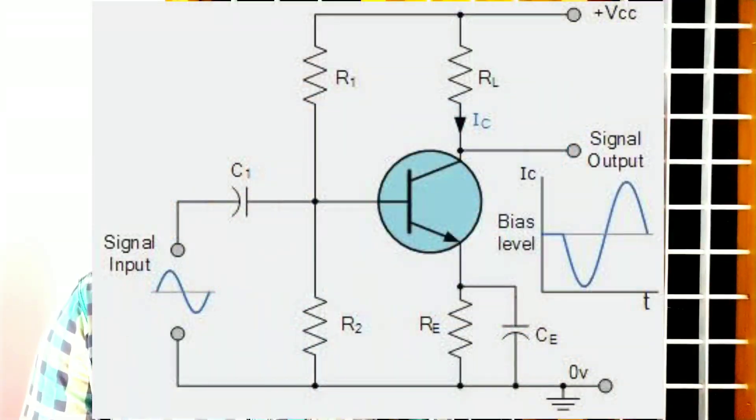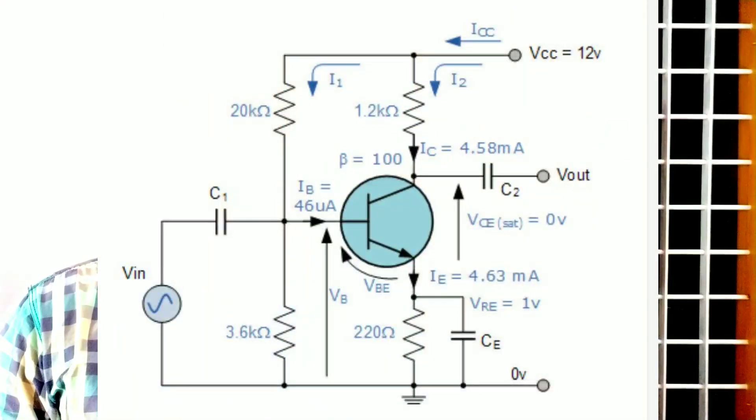Class B is not commonly used. Class A is the most common function. We can use an amplifier that is easy to use and doesn't have many components. Simplified design is a Class A amplifier, where a common emitter works in the output.